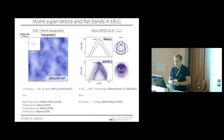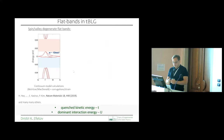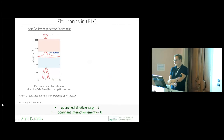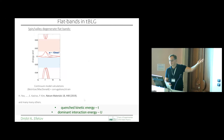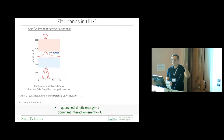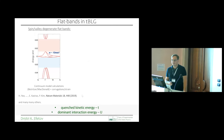Just to slowly start wrapping up the introduction: if we prepare twisted bilayer graphene with 1.1 degrees, we're dealing with a band structure — including some strain effects — that gives us flat bands close to zero energy with a bandwidth of around 10 meV. These bands are separated from higher-order bands by larger band gaps, so they are isolated flat bands.